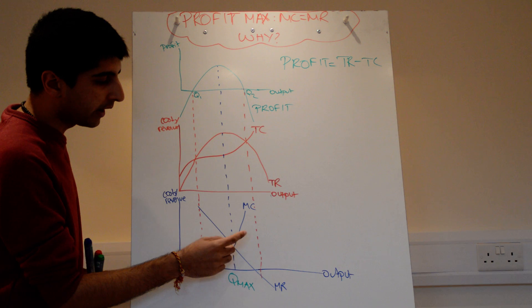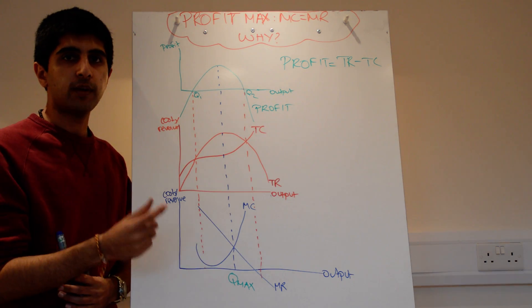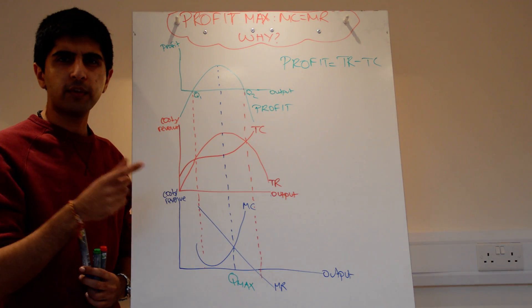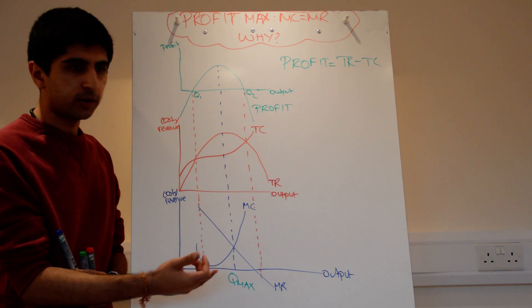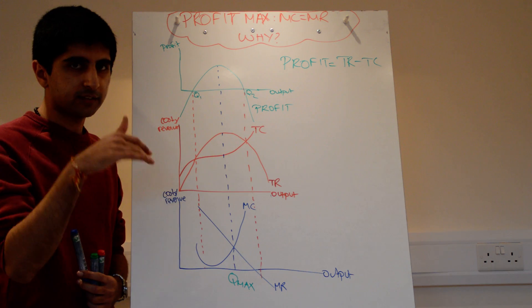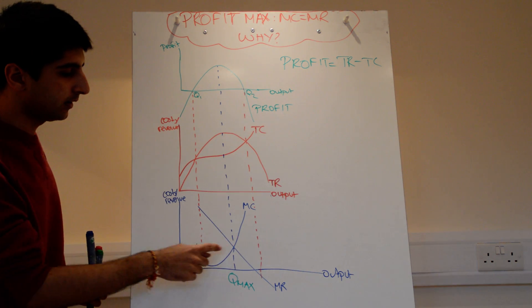At any points to the right, the marginal cost of producing an extra unit is more than the marginal revenue brought in by that extra unit. The cost is more than the revenue by producing more units after this point. That's definitely going to reduce profits. Cost more than revenue, that's going to dampen profits. Any point to the right doesn't make any logical sense. You can see that.